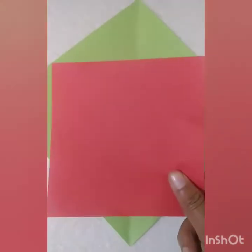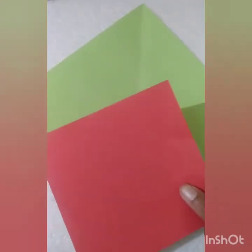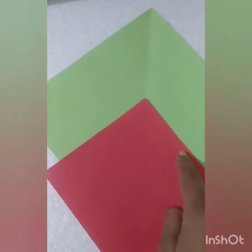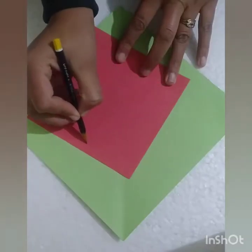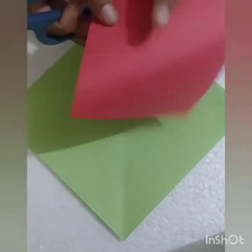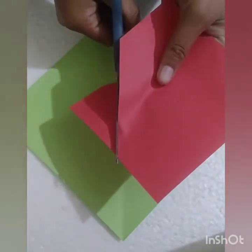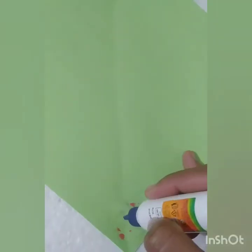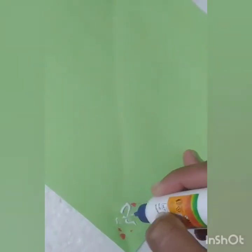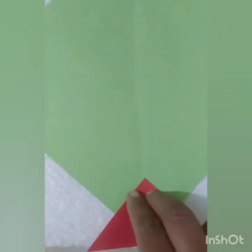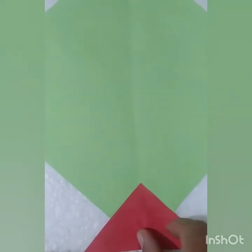Now children, take an origami sheet and cut it into a triangle shape like this. Children, apply Fevicol here and stick the triangle shape in this way.